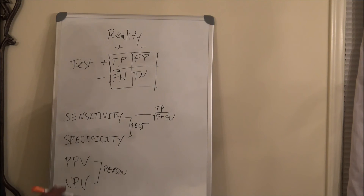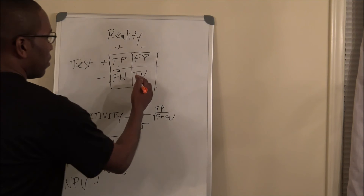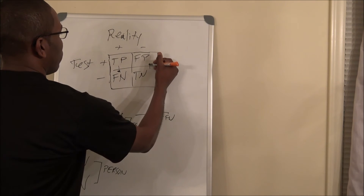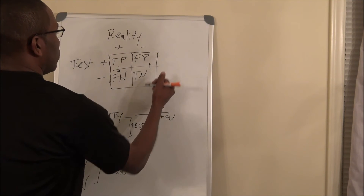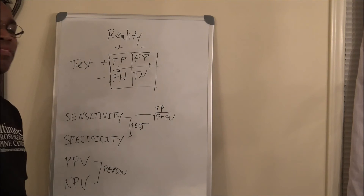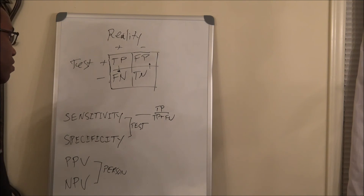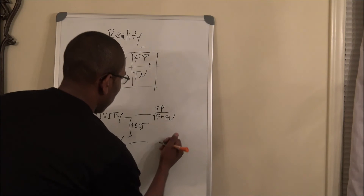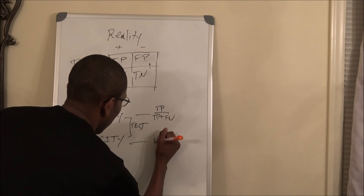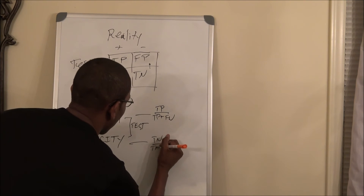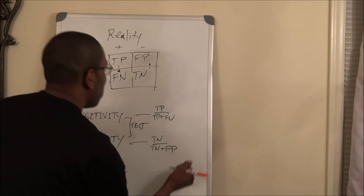For specificity, you're going to take true negatives and go up. It's going to be true negatives divided by true negatives plus false positives.